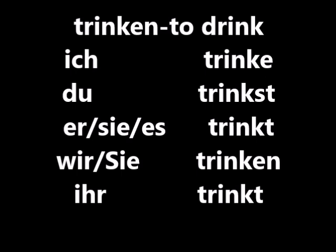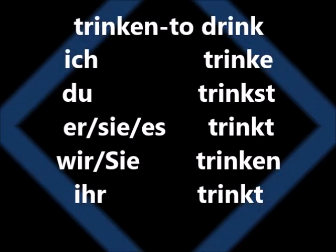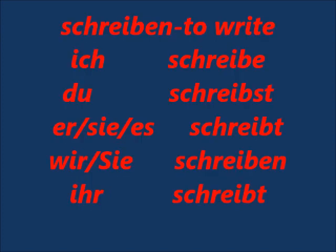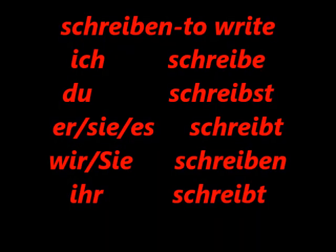As you can see here, examples: trinken, it means 'to drink,' and these are the endings of the verb, or it's called verb conjugations. Similarly, schreiben means 'to write,' and how do we conjugate the verb schreiben.